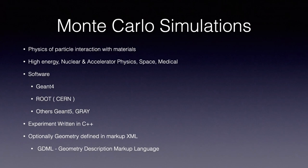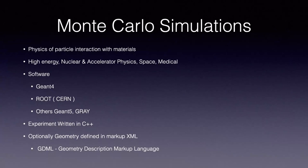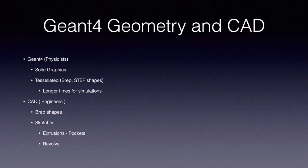Monte Carlo simulations are simulations of the passage of particles through matter. Such simulations are applicable in high-energy physics, nuclear and accelerator physics, the design of shielding in the space environment, various medical usages such as dosage and design of PET scanners, etc. The main related software is Geant4 and ROOT. Experiments are written in C++, but optionally you can have the geometry defined in a markup language, which is what GDML is.